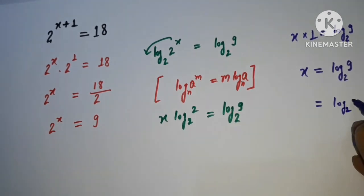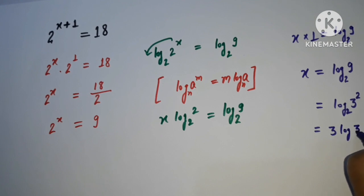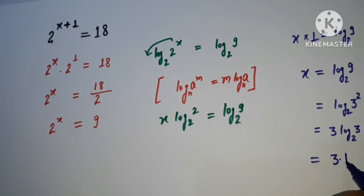We need to solve this. 9 can be written as 3^2 and 2 will come in front. So 2 times log base 2 of 3, and this value is 3.17.